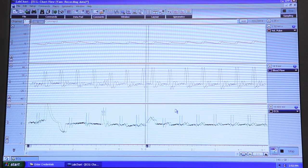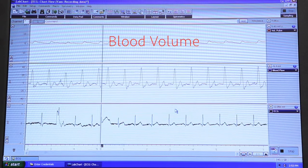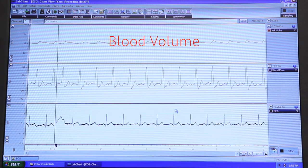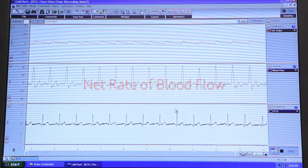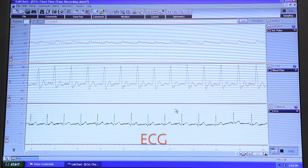The graphs that you see from top to bottom are the following. Channel 1 shows blood volume in the finger over time. Channel 2 shows the net rate of blood flow in the finger over time. And channel 3 is the ECG.